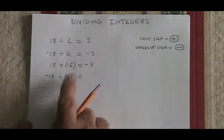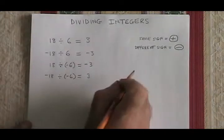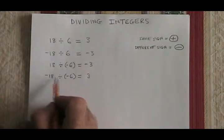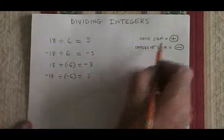Negative 18 divided by negative 6 is equal to 3. This applies to the other rule. They have the same sign, so the answer will be positive.